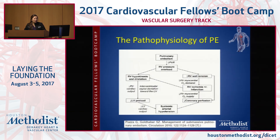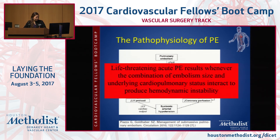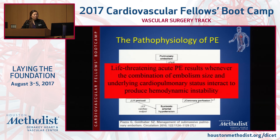What's the pathophysiology of PE? PE causes increased RV wall tension, which then causes possible ischemia and infarction, decreases your coronary perfusion, causes RV dysfunction, decreases LV preload, and then that makes them hemodynamically unstable. A life-threatening acute PE is when you have a combination of large clot burden plus underlying cardiopulmonary status, and those two together produce a very unstable patient.